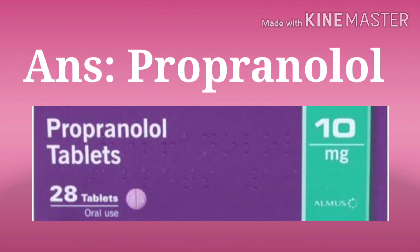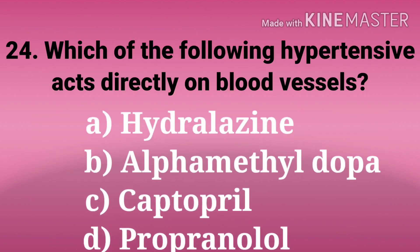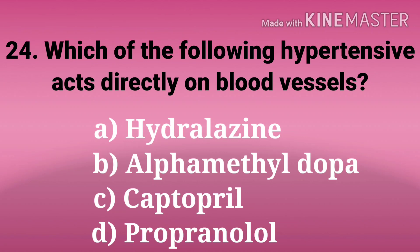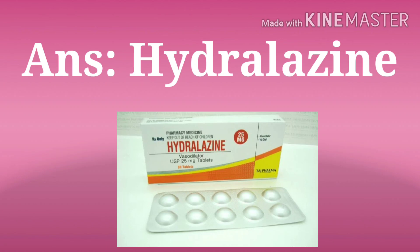And the answer is propranolol. Next question: which of the following antihypertensives acts directly on blood vessels? The options are hydralazine, alpha-methyldopa, captopril, propranolol. The answer is hydralazine.